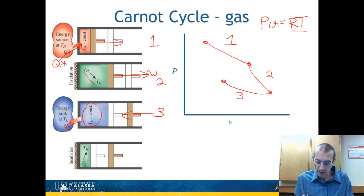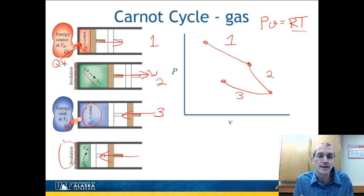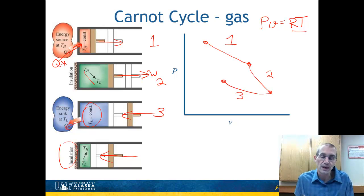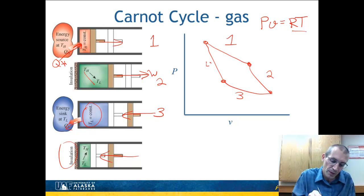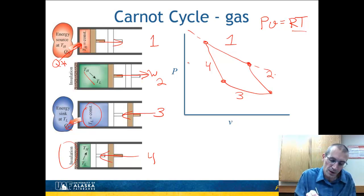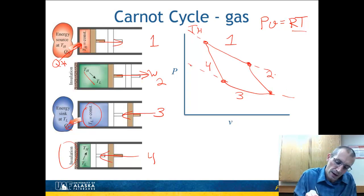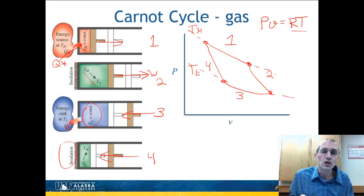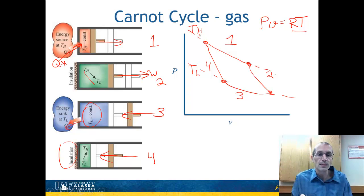To finish the cycle, step four continues to decrease the volume. This step is again insulated, so work is being put in. Because it is insulated, internal energy increases and therefore temperature rises back up to the high temperature. On this PV diagram, there are two isotherms — TH and TL — representing the energy source and the energy sink. There are four steps to the cycle.